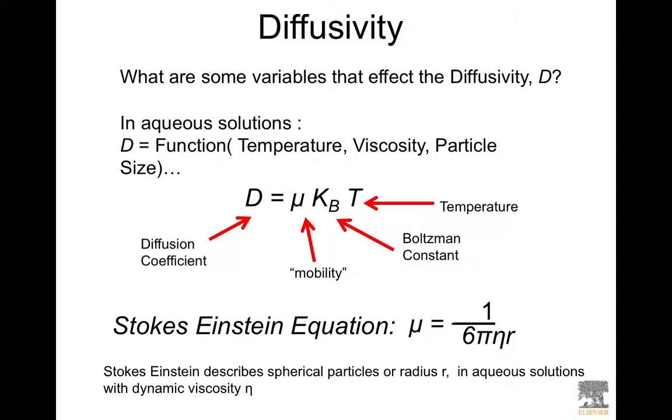Of course diffusivity or any other correlation coefficient can be modeled and they do have, they are a function of physical parameters or chemical parameters. So in the case of diffusivity and aqueous solutions it's a function of temperature, viscosity and particle size. So we have mobility, the Boltzmann constant, temperature all affect the diffusion coefficient and we can use a Stokes-Einstein equation which was experimentally determined to relate the mobility to the size of the particle and the viscosity or dynamic viscosity of the fluid.